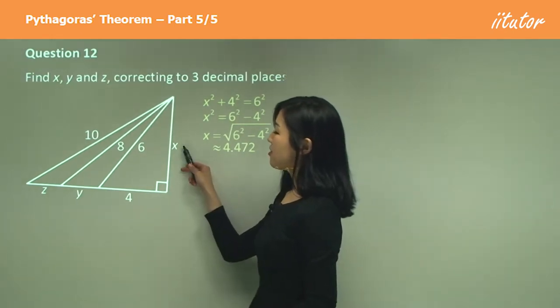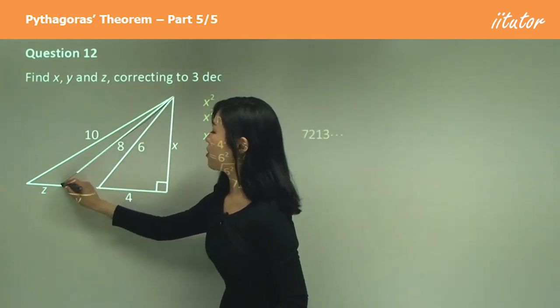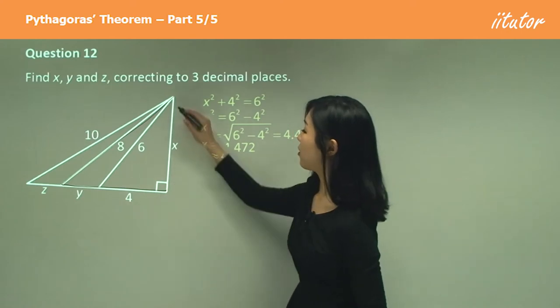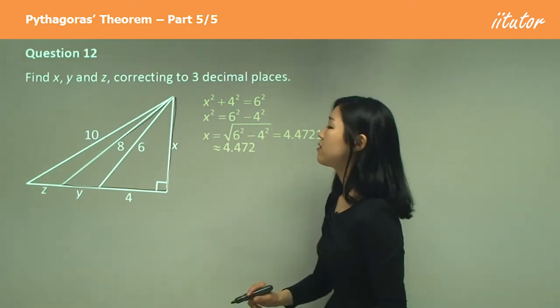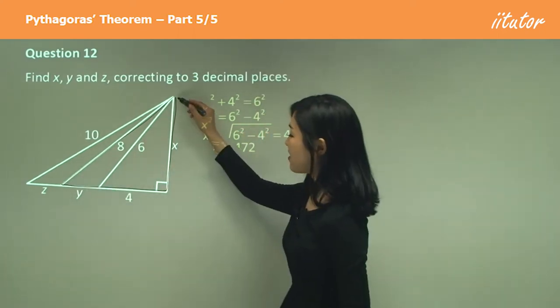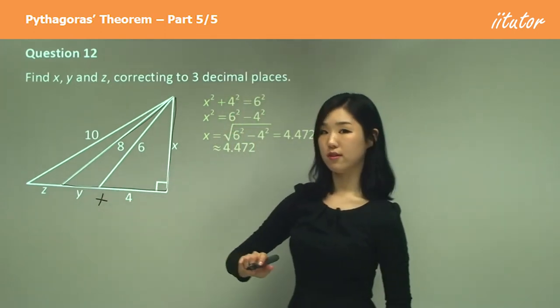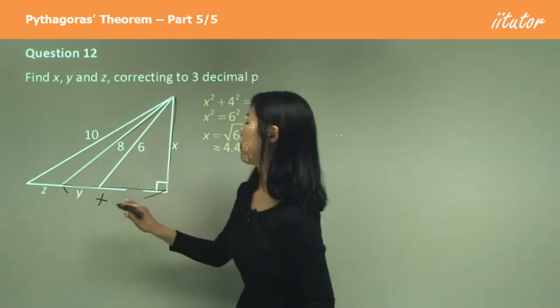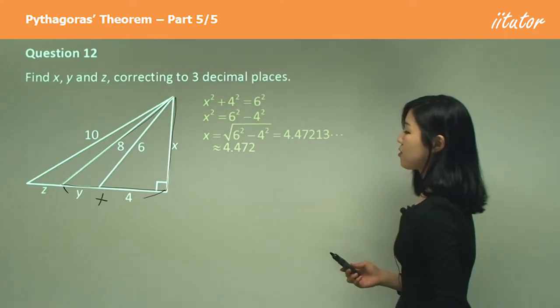Now we've got x. So this time, let's use this triangle. I'm going to try to make a bigger right angle triangle. So this time, the hypotenuse is 8. The adjacent sides are x. This side here is y plus 4. This side is y plus 4 because it's adding those two sides together.